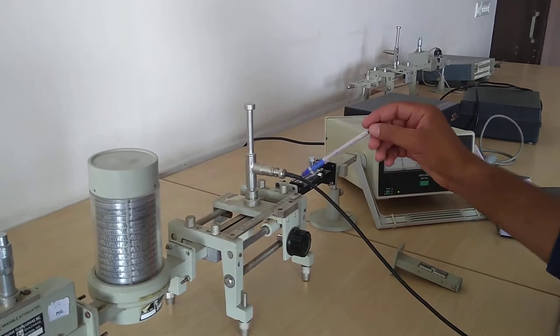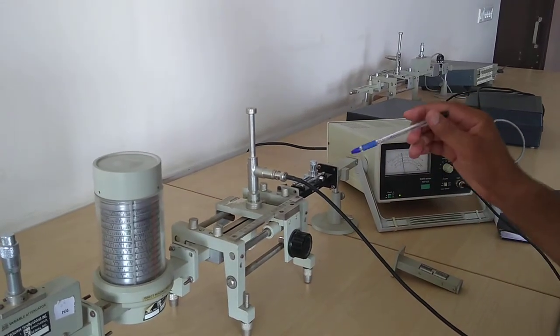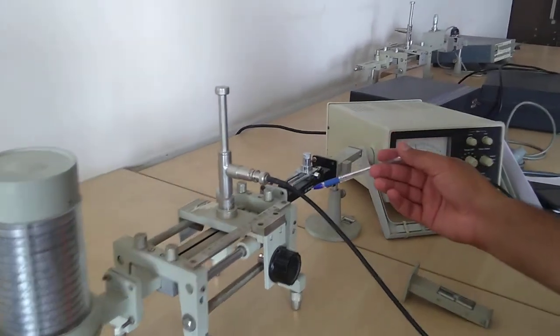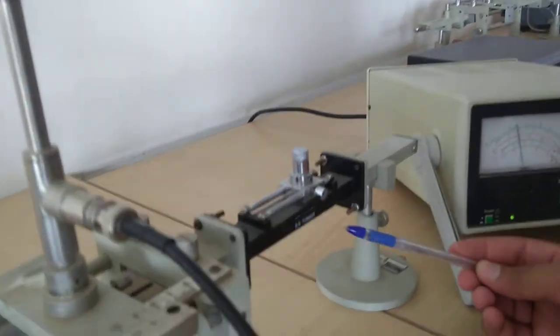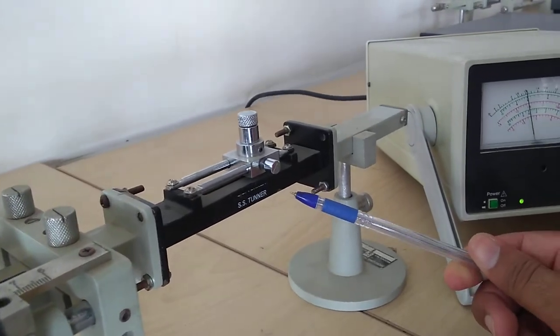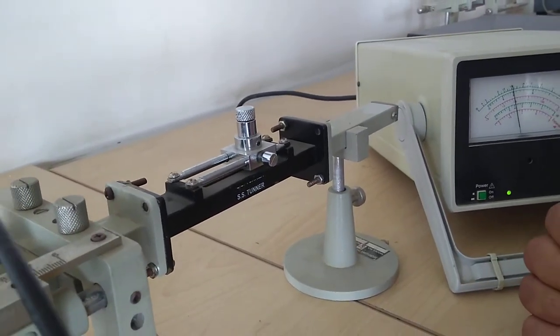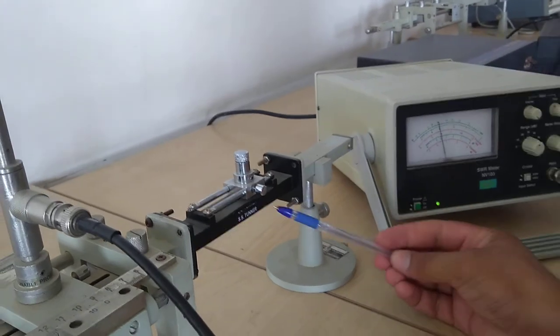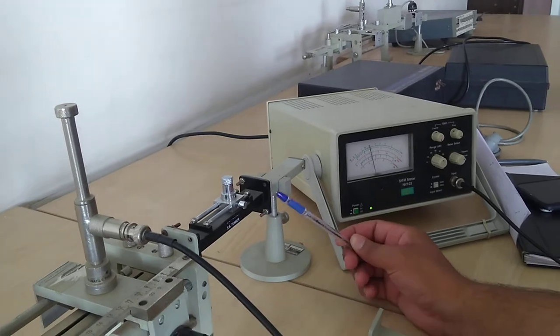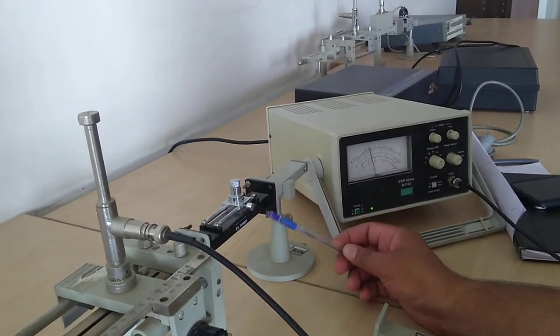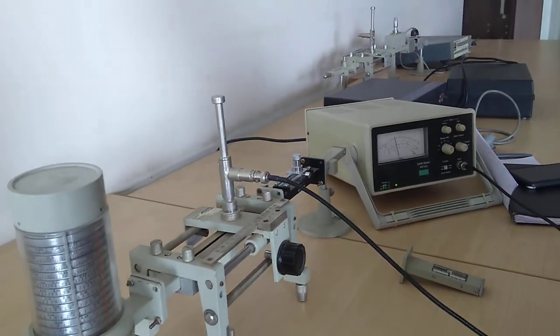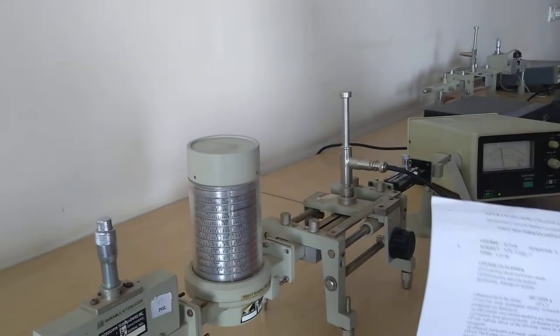This is the SS tuner. This acts as our device under test. The aim of this experiment is to perform VHWR calculation, so this device is used as the device under test. We calculate voltage standing wave ratio for this device only. In the last experiment we calculated the frequency and wavelength of our guide.